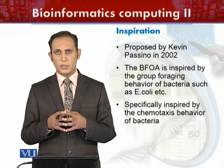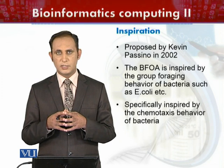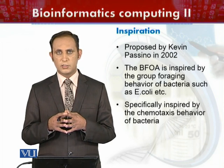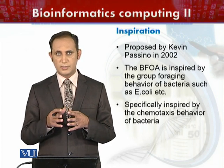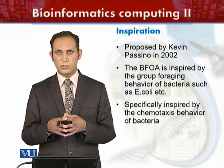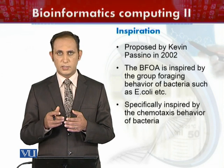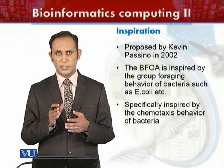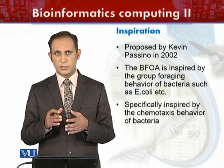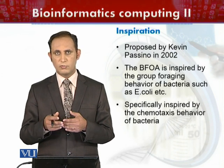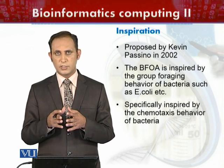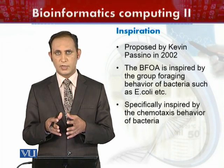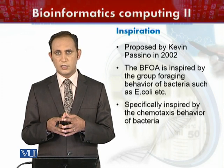In natural systems, bacteria have the ability of chemotaxis. In chemotaxis, this property is related to chemicals in the environment of the bacteria. Bacteria have the potential to move towards or move away from chemicals in their environment depending upon the type and intensity of that chemical. This potential found in natural systems is exploited in bacterial foraging optimization algorithms.